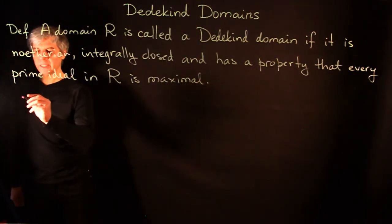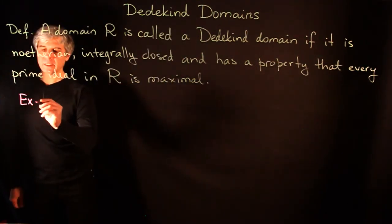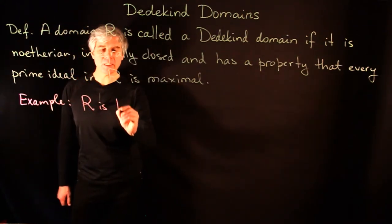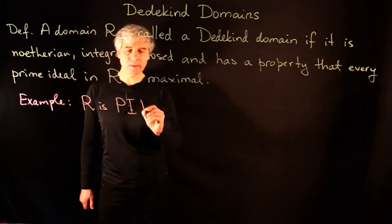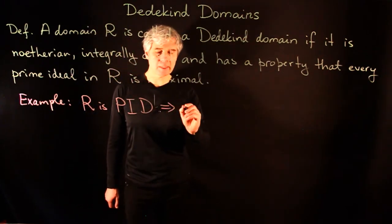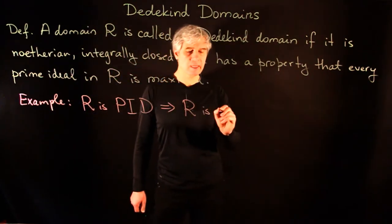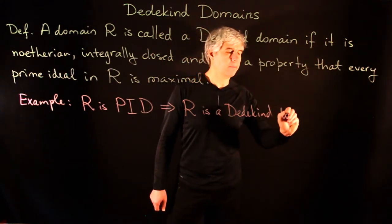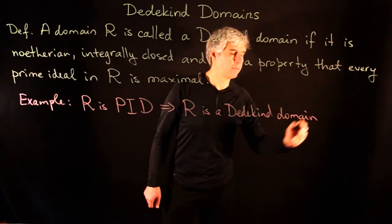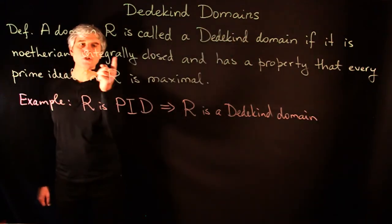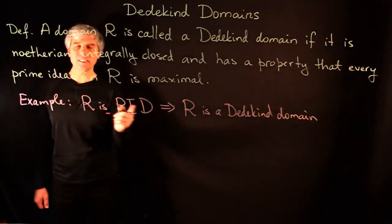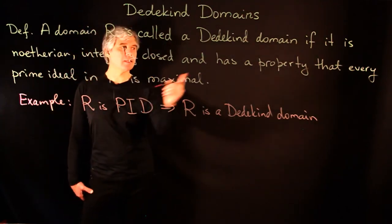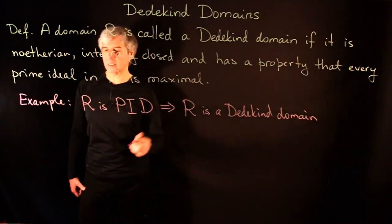As a first example of a Dedekind Domain, let us show that if R is a principal ideal domain, then this implies that R is a Dedekind Domain. So here we need to show that a PID satisfies the three properties: that it is Noetherian, integrally closed, and has the property that every prime ideal is maximal.